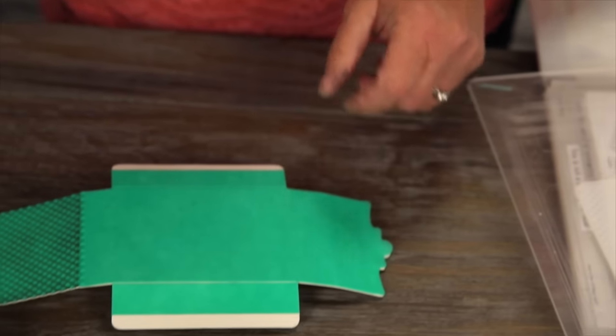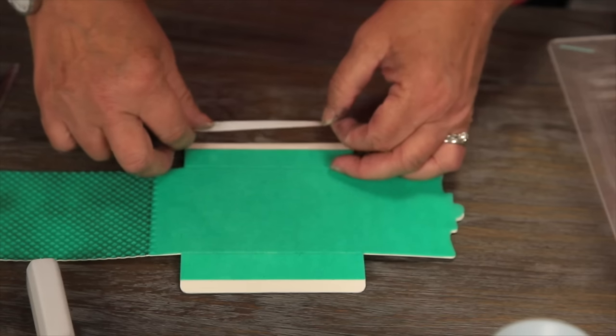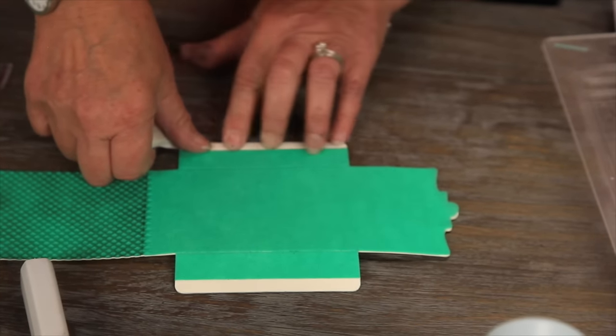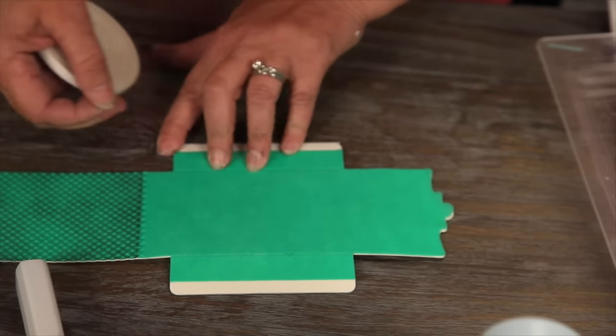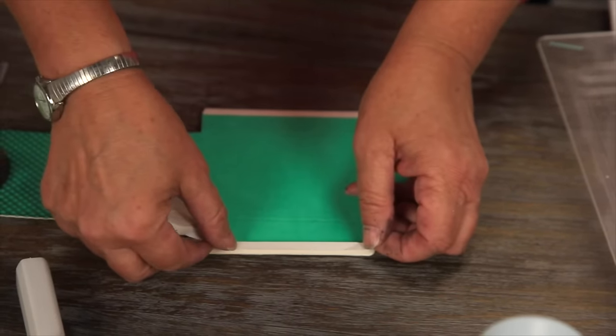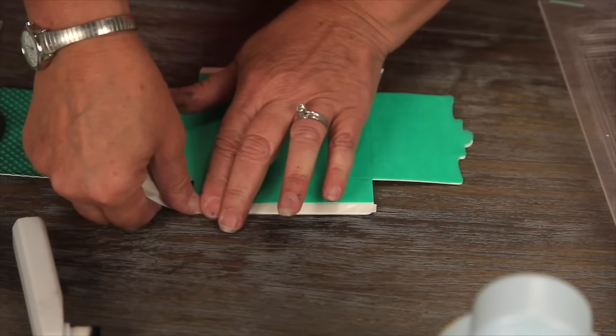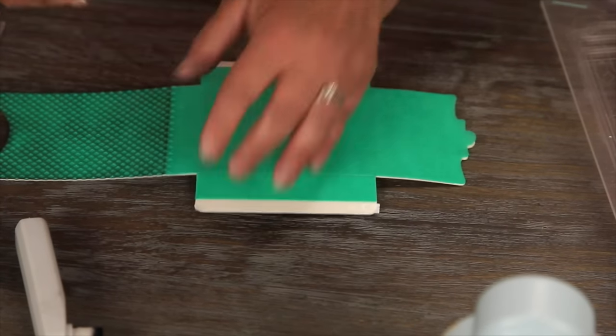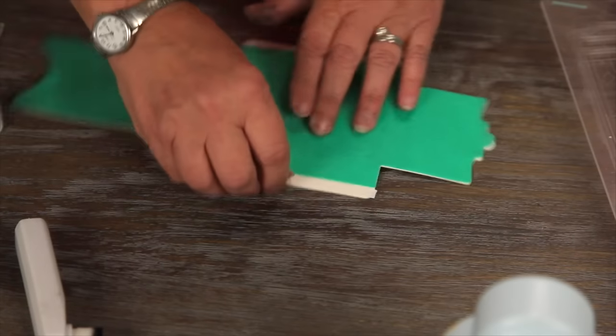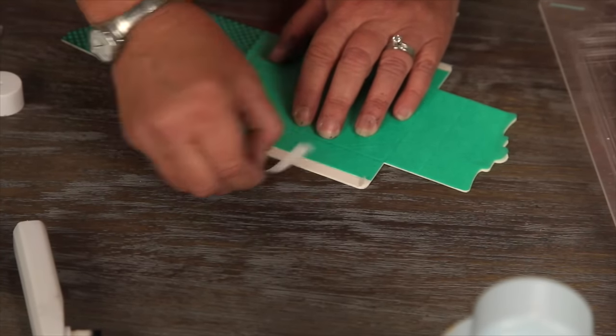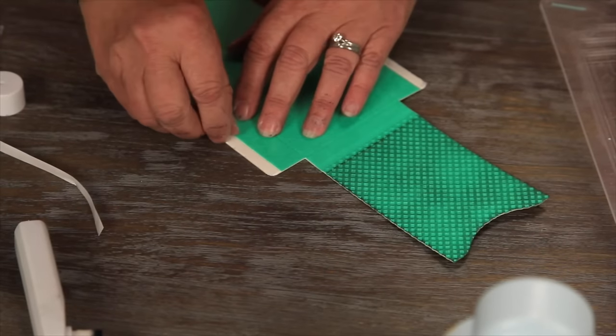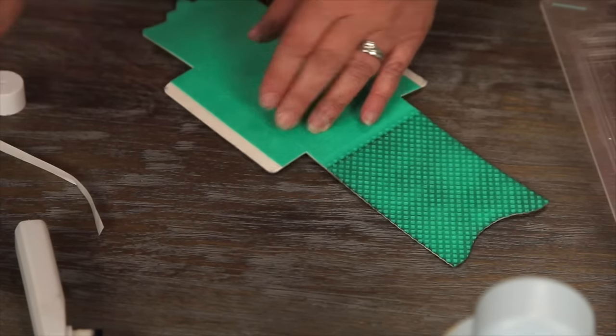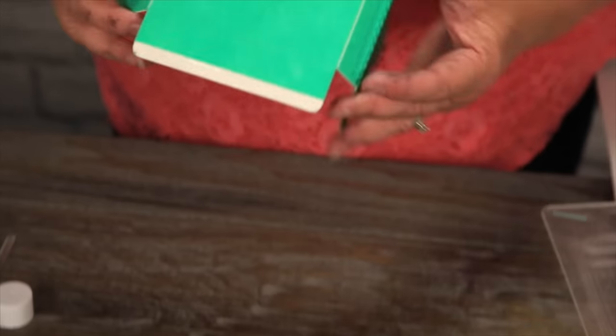Okay. So now we will adhere the box together. So we're going to take our iCraft tape. Let's press it down and burnish so it's easier to get it started. I love that you can just tear it. You don't have to cut it. And then just start in the middle and peel up. Okay. So this goes together so quickly.